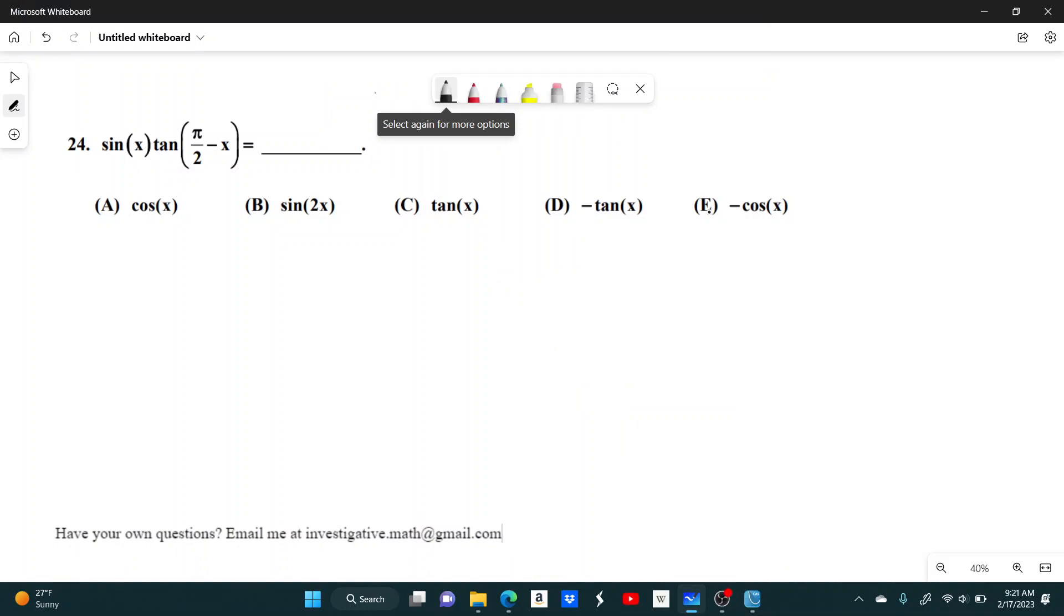Number 24, sine of x times the tangent of pi over 2 minus x equals what? And it looks like this wants us to simplify this into something easier, or something just more simplified, right?